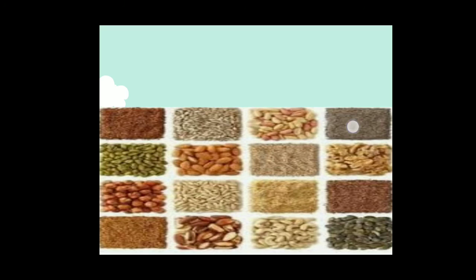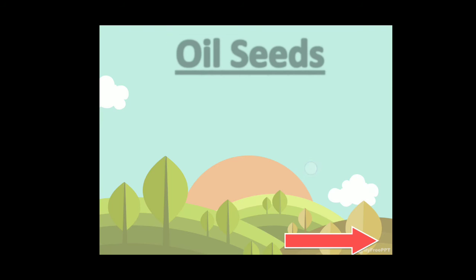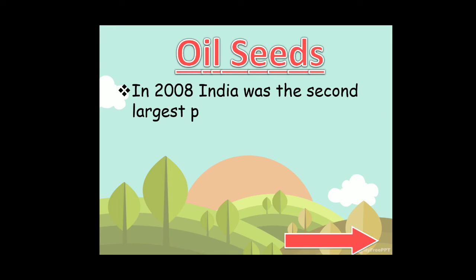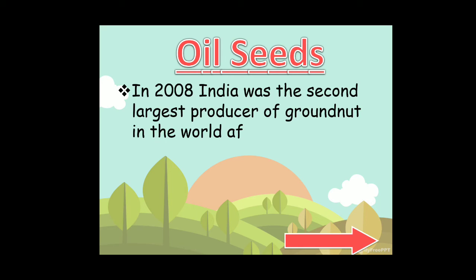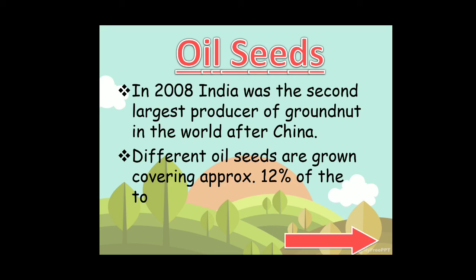Next crop: oilseeds. India consumes a lot of oil. In 2008, India was the second largest producer of groundnut in the world after China. Different oilseeds are grown covering approximately 12% of the total cropped area of the country.